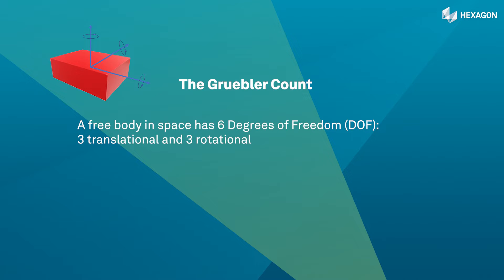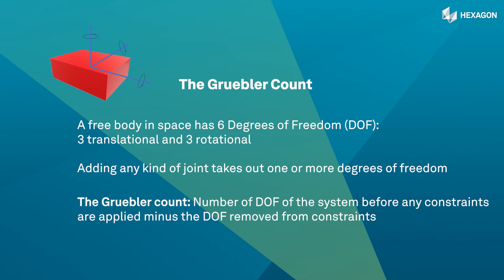Let's see how it works. A free body in space has six degrees of freedom or DOF. These are the number of independent ways it can move. Adding any kind of joint takes out one or more degrees of freedom. The Gruebler count of a system is defined as the number of degrees of freedom of the system before any constraints are applied minus the degrees of freedom removed from constraints.